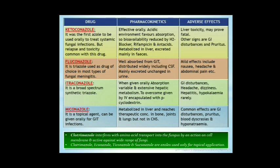Itraconazole is a broad-spectrum synthetic triazole. When given orally, absorption is variable and it is metabolized in the liver. To overcome extensive hepatic metabolism, it is given IV encapsulated with beta-cyclodextrin. Adverse effects include GI disturbances, headache, dizziness, hepatitis, hypokalemia, etc.